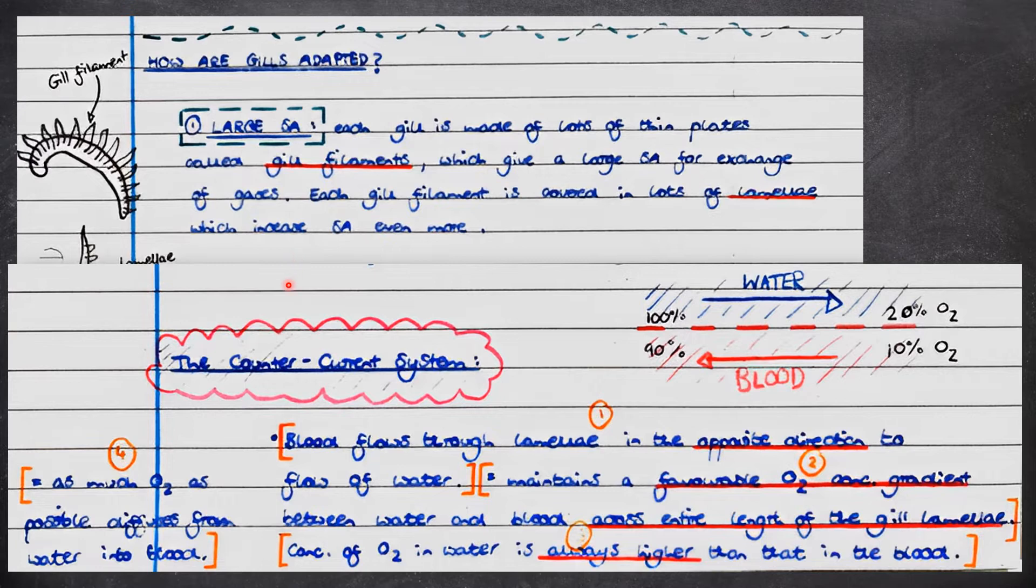Finally, fish have something called the countercurrent system. In the countercurrent system, blood flows through the lamellae in the opposite direction to the flow of water. This maintains a favourable concentration gradient of oxygen between the water and the blood across the entire length of the gill lamellae. By the way, this is really important to include in your response in exams, that it is across the entire length of the gill lamellae. Therefore, the concentration of oxygen in the water is always higher than that in the blood. And therefore, as much oxygen as possible diffuses from the water into the blood.